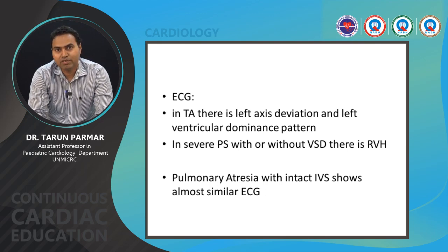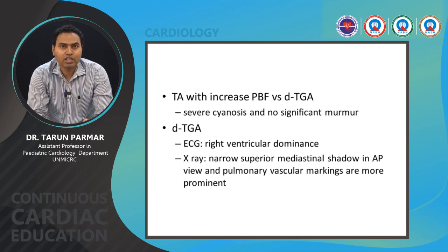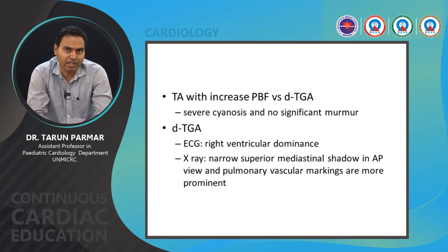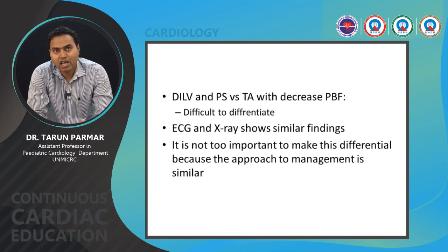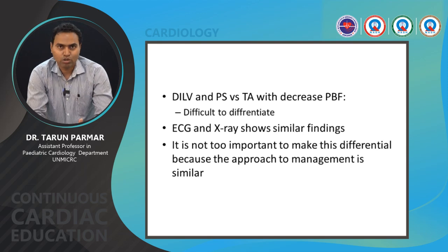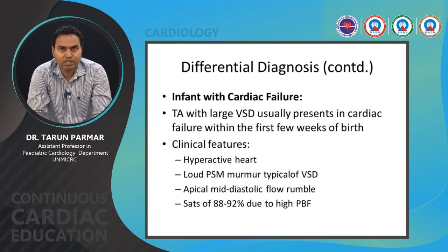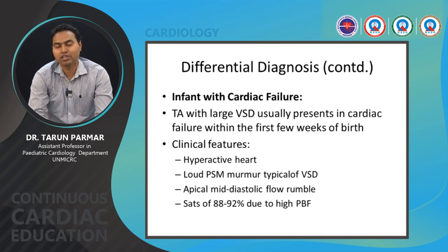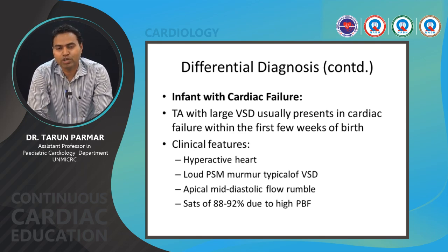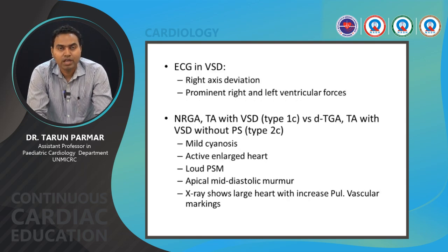Pulmonary atresia with intact ventricular septum shows an almost similar ECG to tricuspid atresia. Tricuspid atresia with increased pulmonary blood flow versus D-TGA: both present with severe cyanosis and no significant murmur, but in D-TGA the ECG shows right ventricular dominance and the X-ray shows a narrow superior mediastinal shadow in the AP view with more prominent pulmonary vascular markings. Double outlet right ventricle (DORV) with pulmonary stenosis and tricuspid atresia with decreased pulmonary flow are difficult to differentiate clinically; the management approach is similar in both decreased QP and increased QP situations.